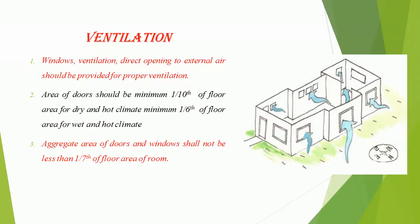Ventilation: Windows and ventilation with direct opening to external air should be provided for proper ventilation. The area of doors should be a minimum one-tenth of the floor area for dry and hot climates, and a minimum one-sixth of the floor area for wet and hot climates. The aggregate area of doors and windows shall not be less than one-seventh of the floor area of the room.